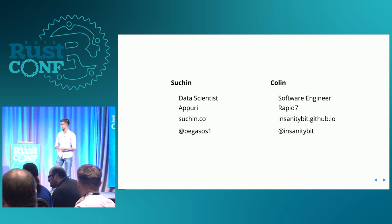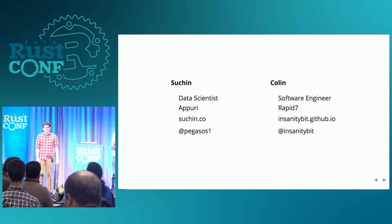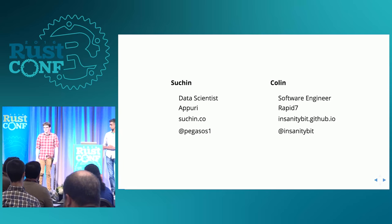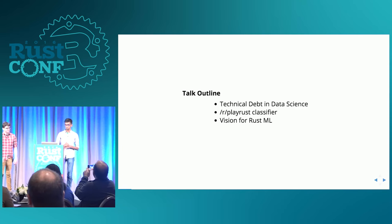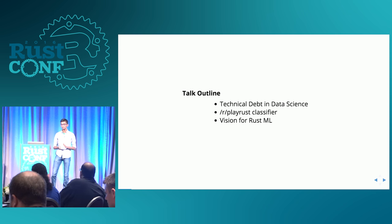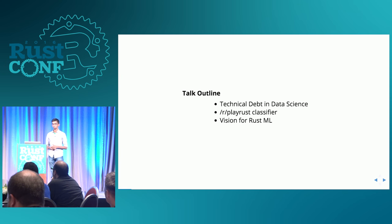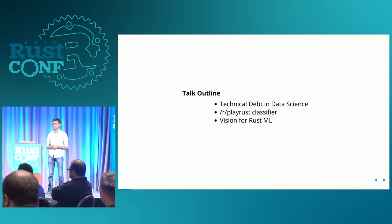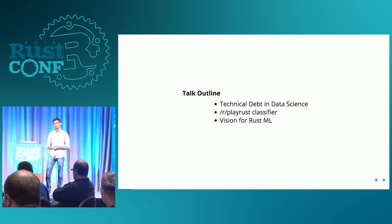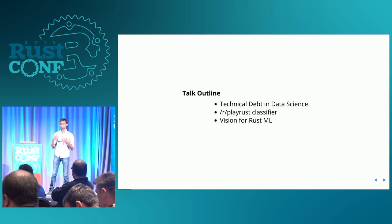I'm here with my former co-worker Colin O'Brien. I'm a software developer at Rapid7. We do computer security work, incident detection and response. You can find me online at InsanityBid on Twitter, or almost any time on the Rust IRC where I go by static assert. This talk is about our experience building scalable machine learning systems with questionable data. We're going to talk about technical debt in data science, a toy machine learning problem we solved entirely in Rust, and our vision for Rust machine learning.